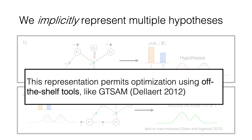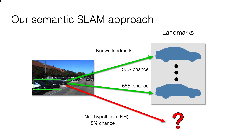The resulting factor graph representation that we develop is amenable to continuous optimization techniques like Gauss-Newton and others, available with common off-the-shelf optimization tools for navigation like GTSAM. By leveraging these tools, our method can achieve real-time performance. Finally, we can account for potential false positives in this framework by allowing for a null hypothesis decision, corresponding to a Gaussian prior with large variance.